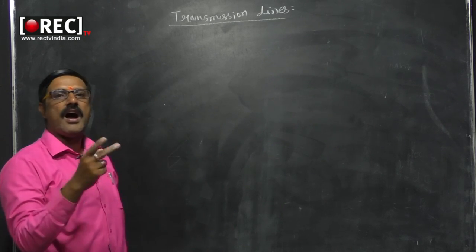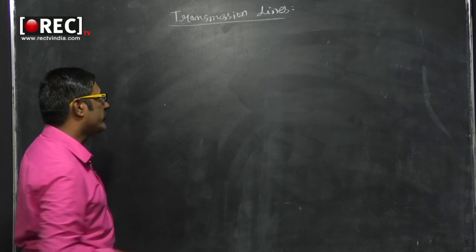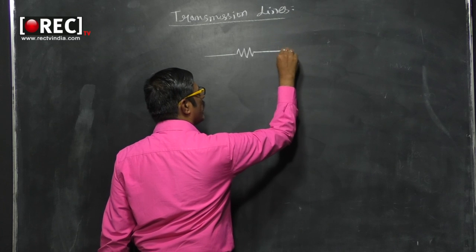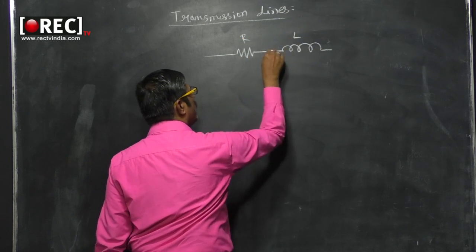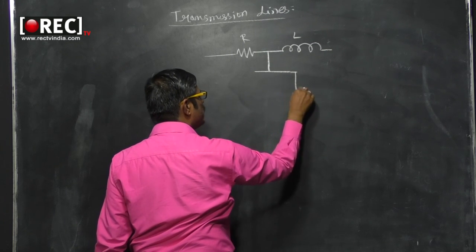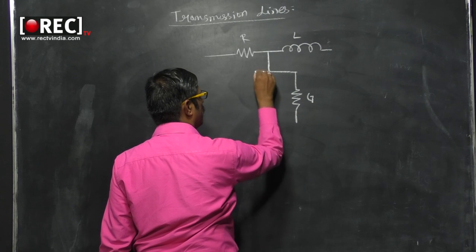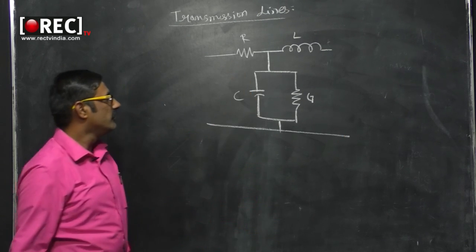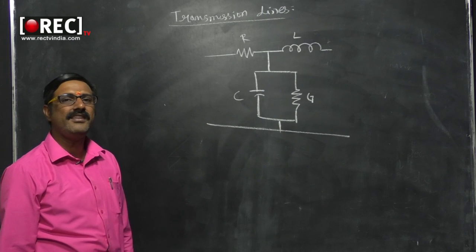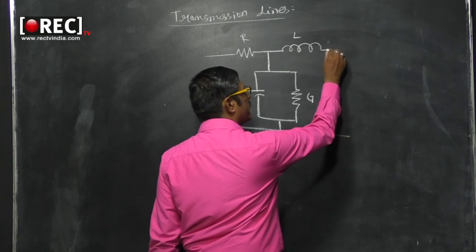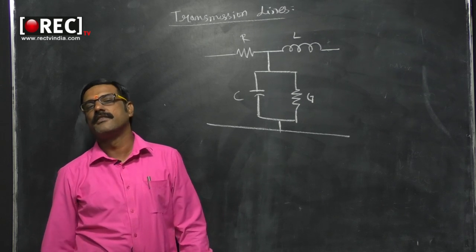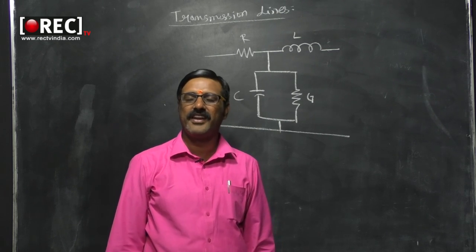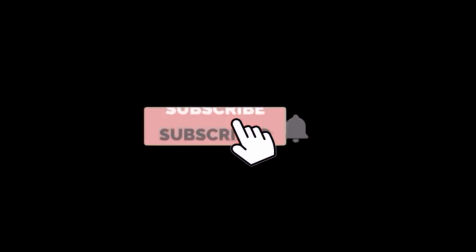Since R and L are series elements and G and C are parallel elements, in one unit length of a transmission line the arrangement of R, L, C, G follows this equivalent circuit structure. With this we have completed the basics of transmission lines, and in the next session we will discuss the transmission line equations. Thank you for watching — please subscribe to our channel REC TV Education.